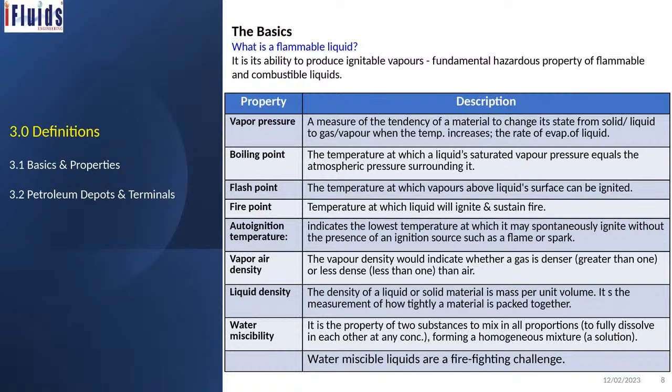Flash point is very critical in oil storage facilities — it is the temperature at which vapors above the liquid surface can be ignited. Fire point is the temperature at which the liquid will ignite and sustain fire. Auto-ignition means the material can catch fire by itself under certain conditions. Vapor-air density, liquid density, and water miscibility are all important aspects in oil storage handling.